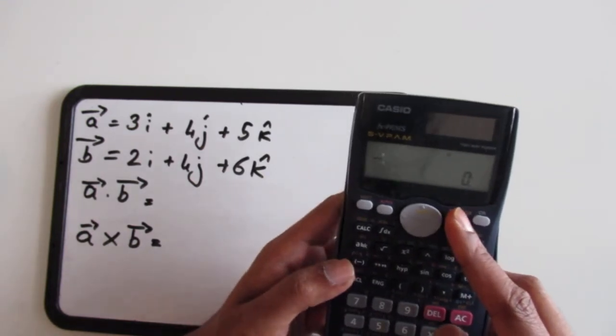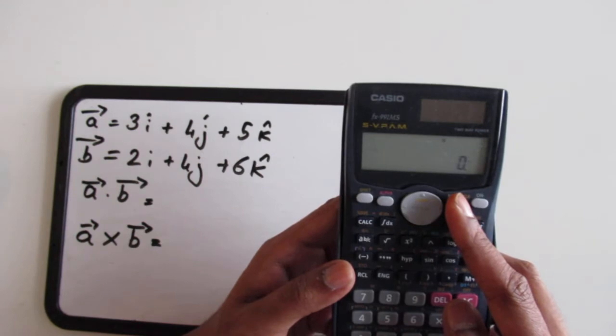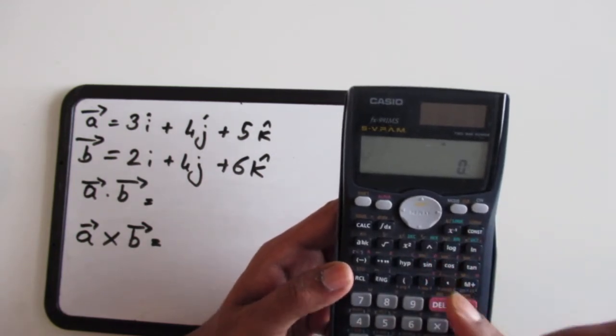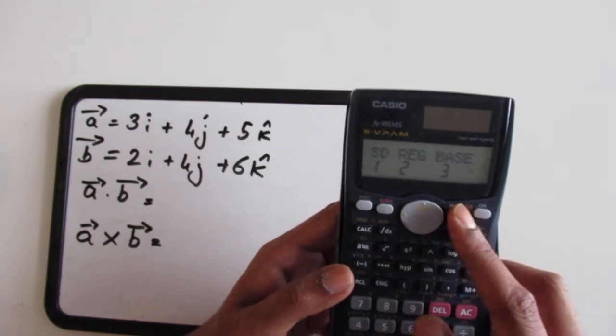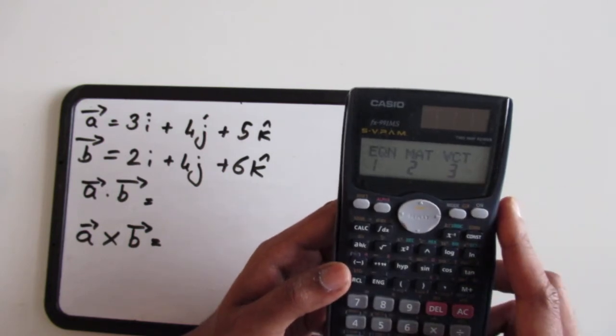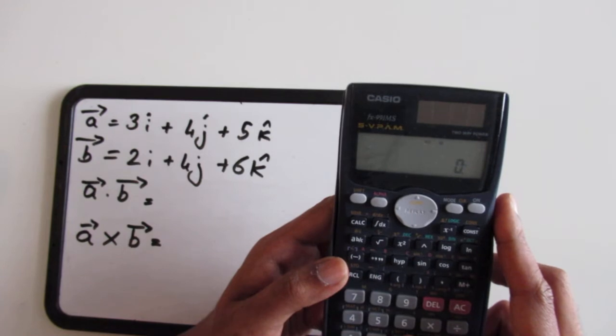The next thing I'm going to do, similar to what we did in the matrix operations, is input the values of vector A and vector B. We do that by clicking the mode button three times and then going to vector mode. So I press 3 and now the calculator is in vector mode.